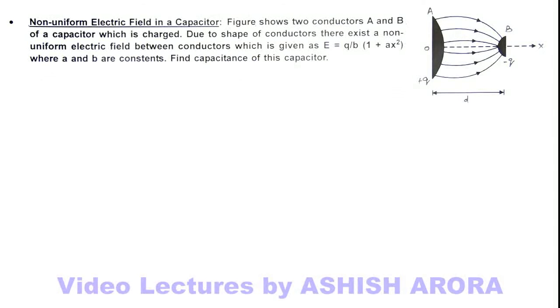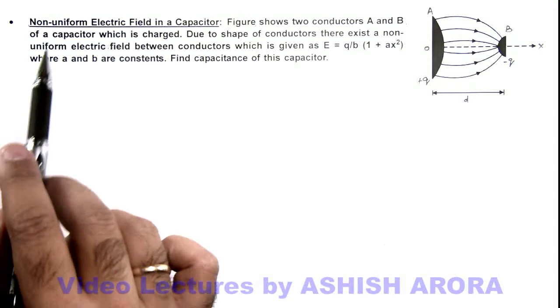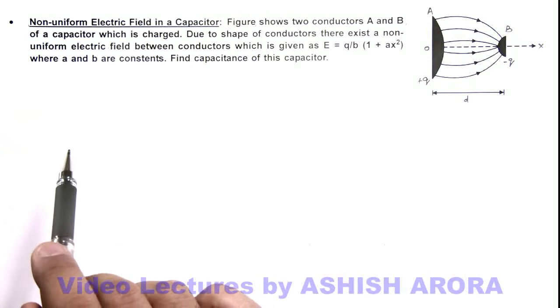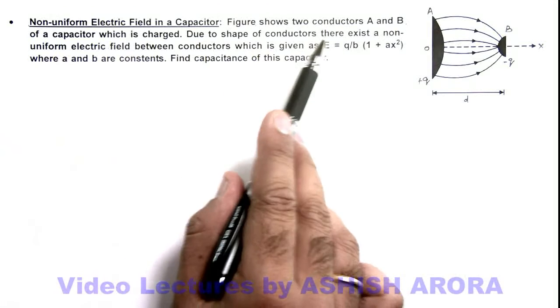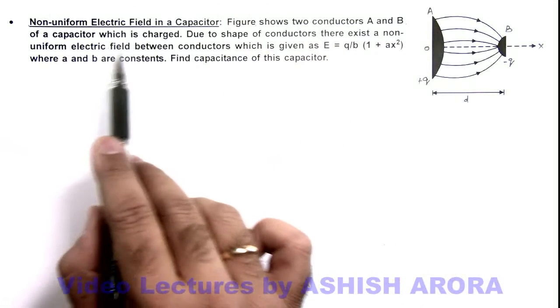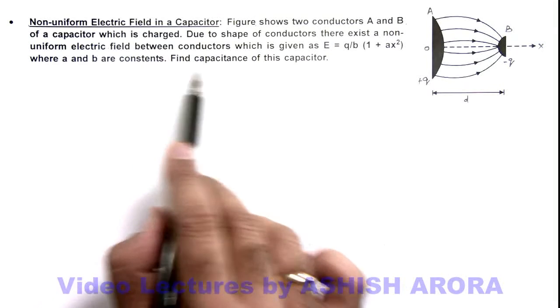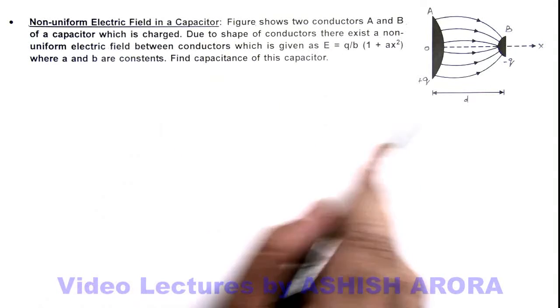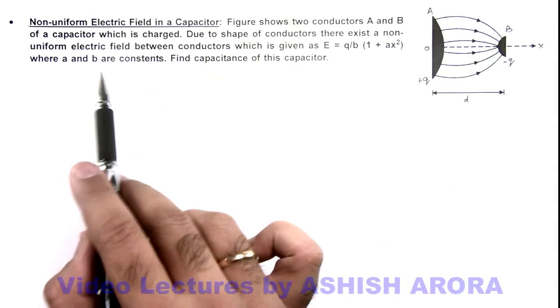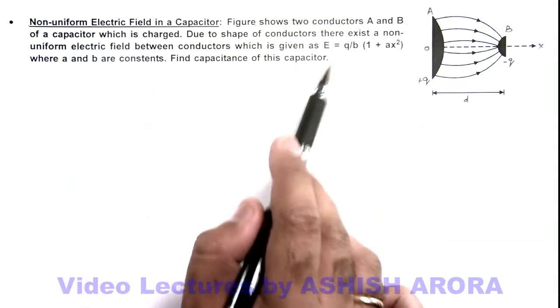In this illustration, we'll see about non-uniform electric field in a capacitor. Here the figure shows two conductors A and B of a capacitor which is charged. And due to the shape of these conductors, there exists a non-uniform electric field between conductors which is given as